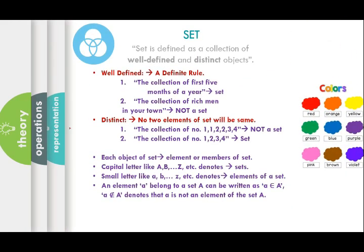Set is defined as a collection of well-defined and distinct objects. What is well-defined? Well-defined means it should have a definite rule and it should be countable. For example, find the number of first five months of the year — you can count exactly what those months are. But if I say the collection of rich men in your town, you cannot make the collection because you don't know the definition of rich men. The criteria may be a person earning annually three lakhs or three thousand dollars or more. The criteria for finding this collection is unknown, so this cannot form a set.